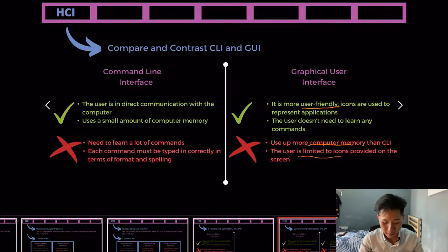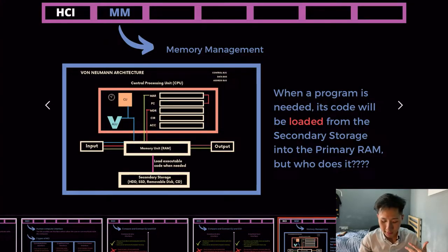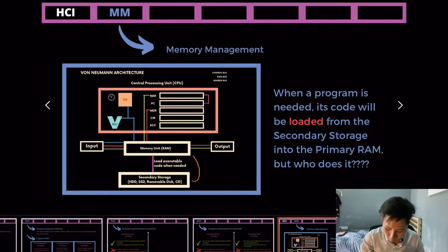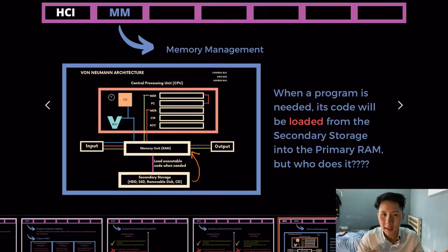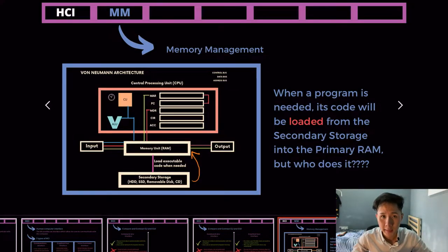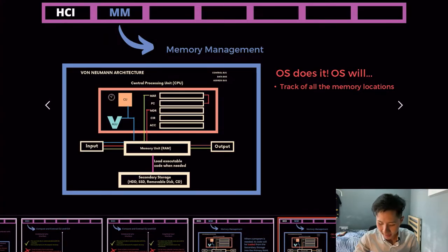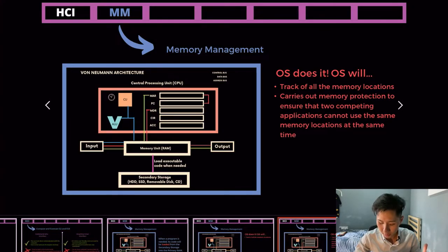The second function of the OS is memory management. When a program is needed, its code is loaded from secondary memory into the primary RAM — but the operating system is the one that does this moving in and out. The OS tracks all memory locations and carries out memory protection to ensure that two competing applications cannot use the same memory locations.